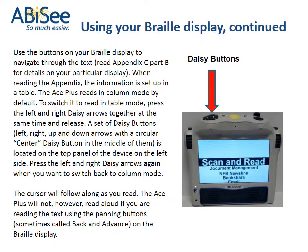Press the left and right daisy arrows again when you want to switch back to column mode. The cursor will follow along as you read. The Ace Plus will not, however, read aloud if you are reading the text using the panning buttons — sometimes called back and advance — on the Braille display.